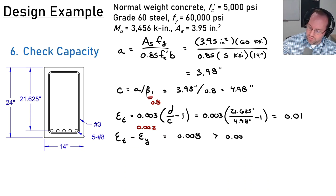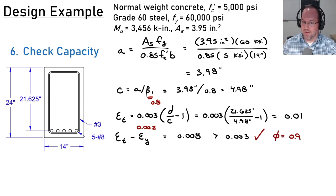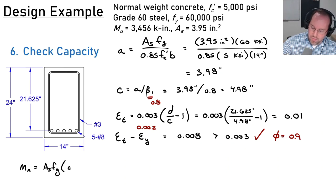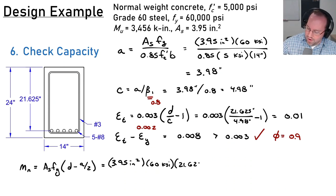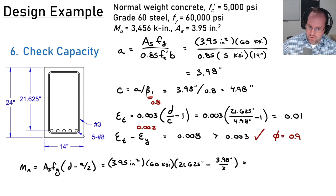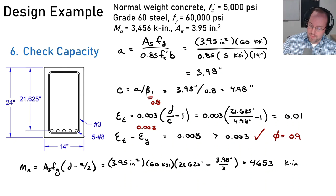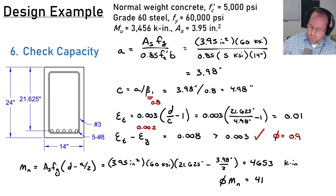Now calculating nominal moment capacity: Mn = As·fy × (d − a/2) = 3.95 × 60 × (21.625 − 3.98/2) = 3.95 × 60 × 19.635 = 4,653 kip-inches. The design capacity is φMn = 0.9 × 4,653 = 4,190 kip-inches.